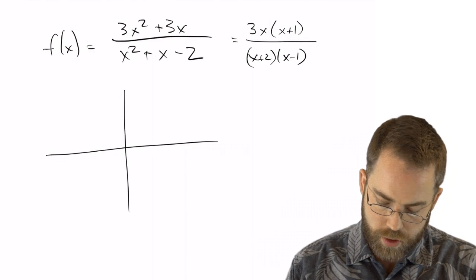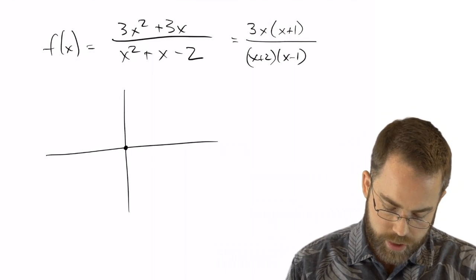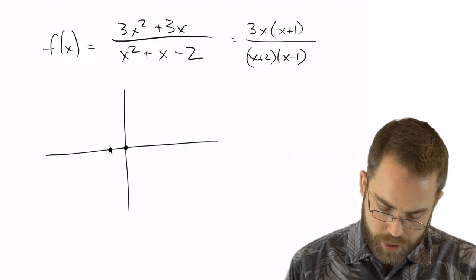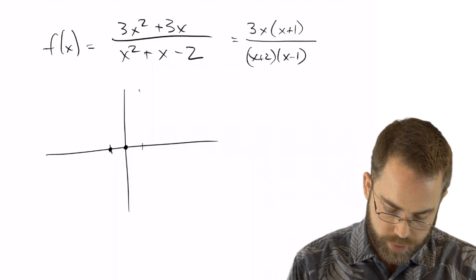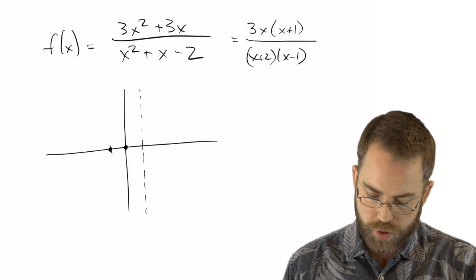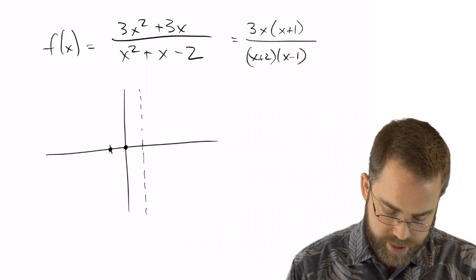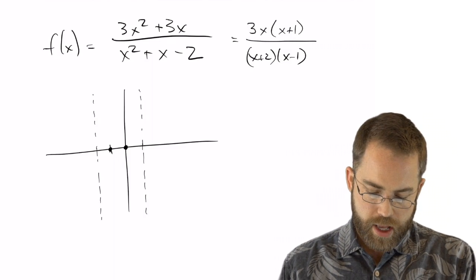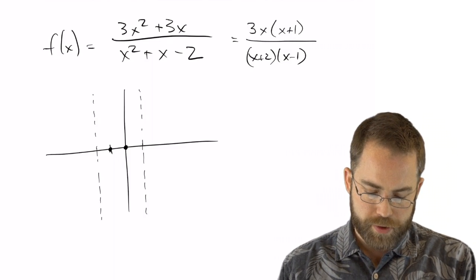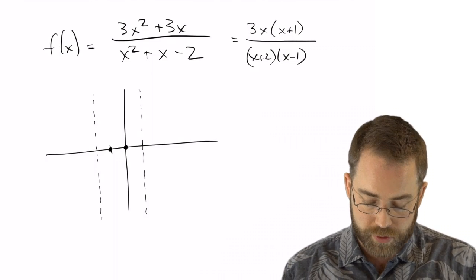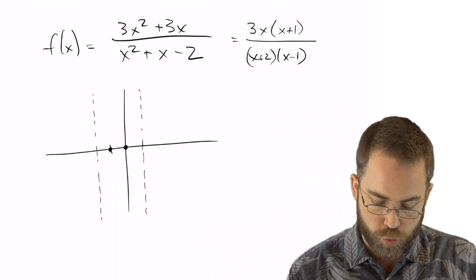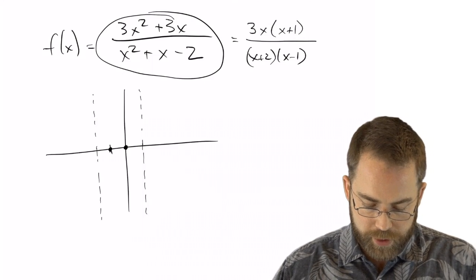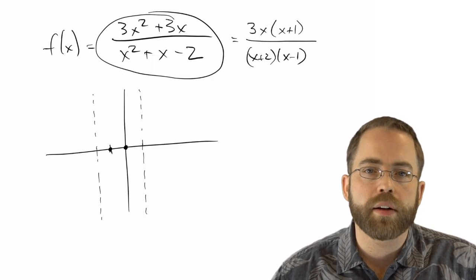The top equals zero at x=0 and at x=-1. When does the bottom equal zero? The bottom equals zero at x=1, giving one vertical asymptote, and at x=-2, giving another vertical asymptote. What happens if I plug in zero for the y-intercept? Plugging in zero is most easily done in the original function. That gives zero, so the y-intercept is the point (0, 0), which I already have.